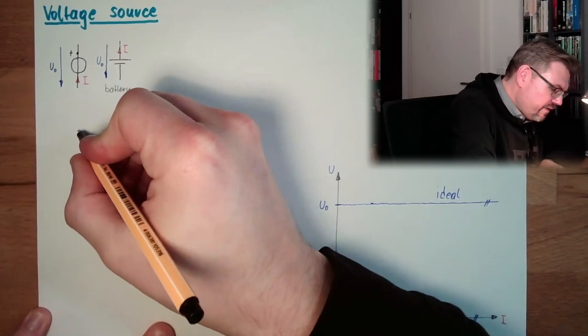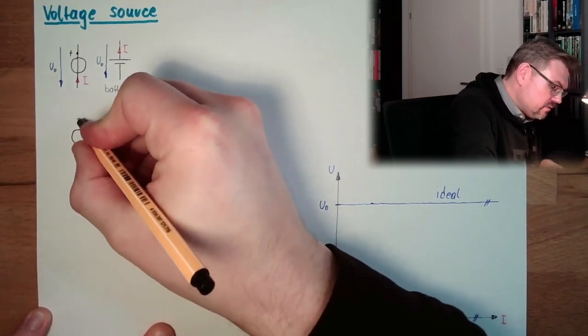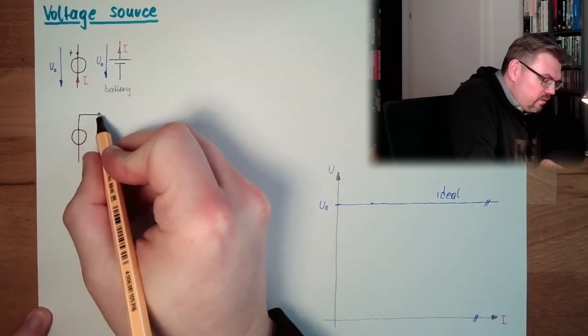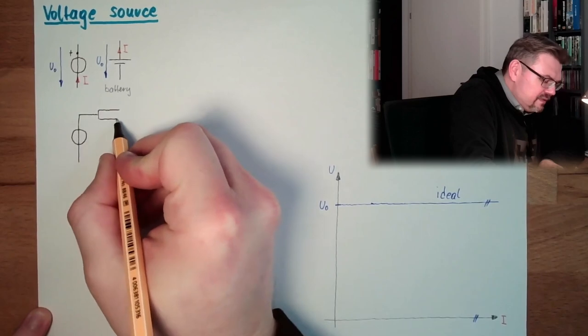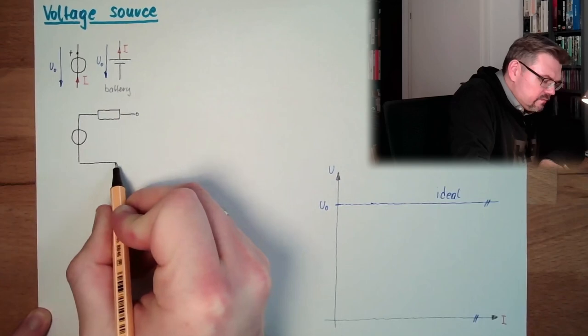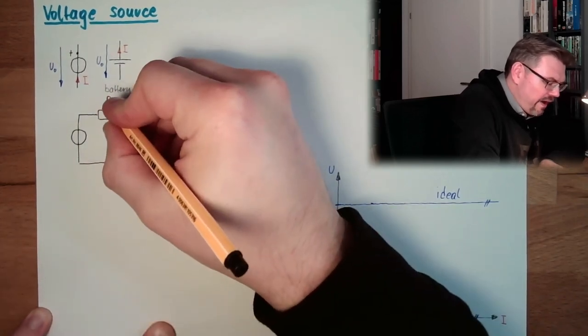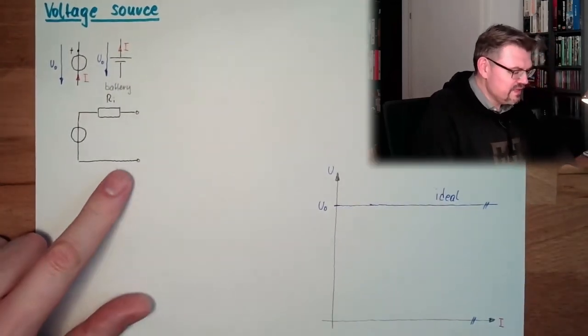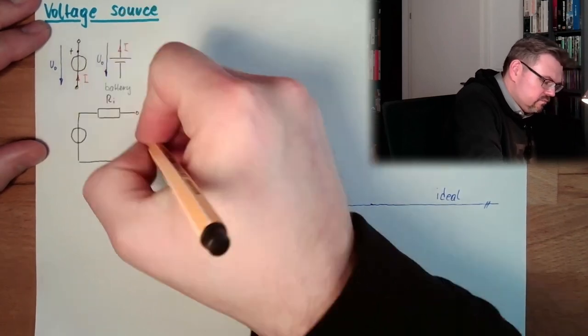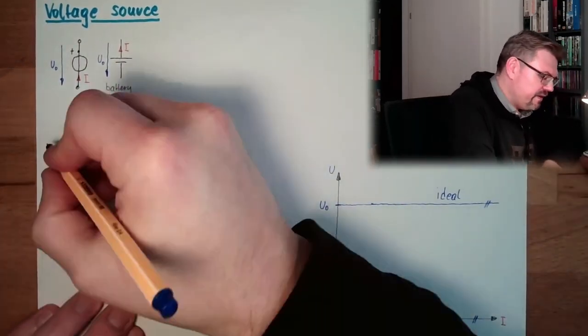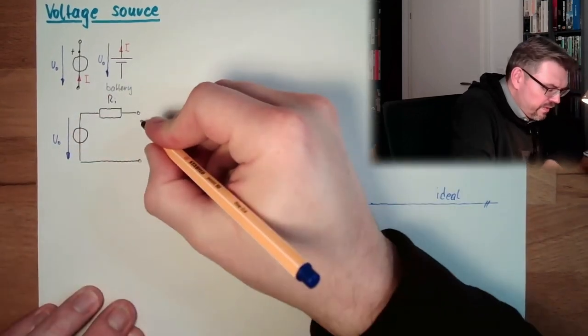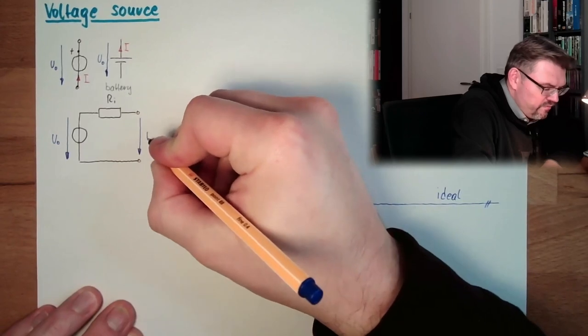So how to show how a real voltage source is basically working? Well, we do have a voltage source, an ideal voltage source. And then we have an internal resistance. We have an RI here. And this is now the clamps of the voltage source. So they would be here. So internally we have something ideal with a U0. But here we only have U.